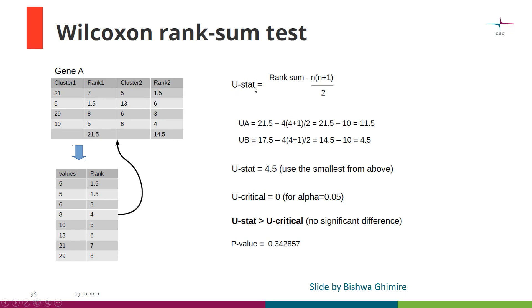Then we calculate U statistics for both cases using the formula. We plug in the numbers — we had four cells, so n is 4 — and get the final U statistic values. We take the smaller one and compare it to the critical value. Since it is bigger than zero, our conclusion is that there is no significant difference of this gene between cluster 1 and cluster 2.